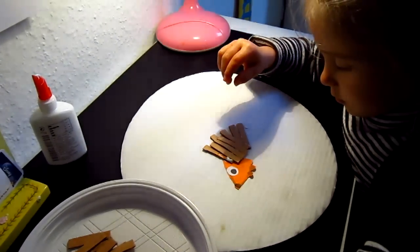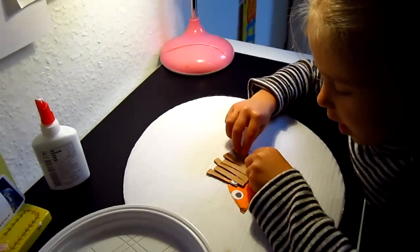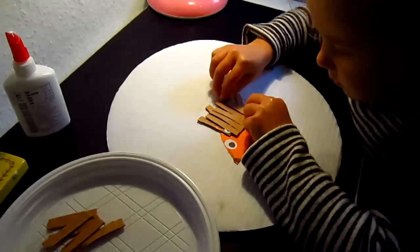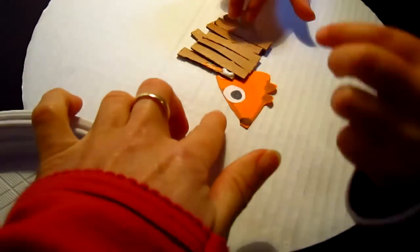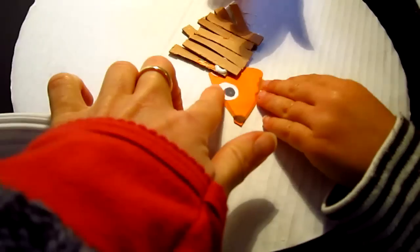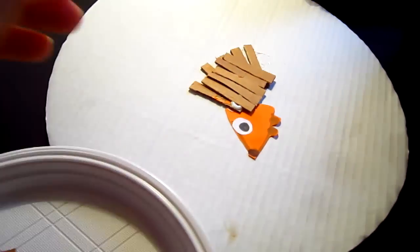Tina here is making a little porcupine. We made a little face with orange colored paper and a little eye. You can use a pop-up eye if you have.